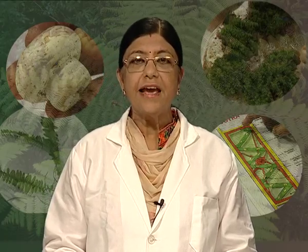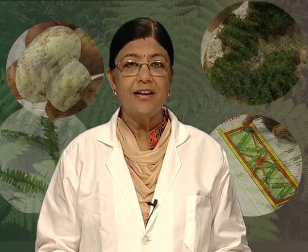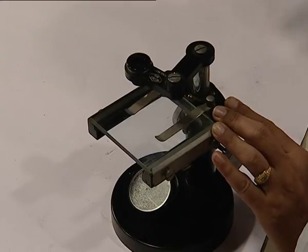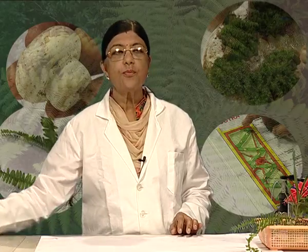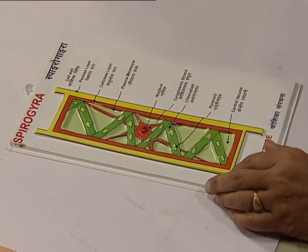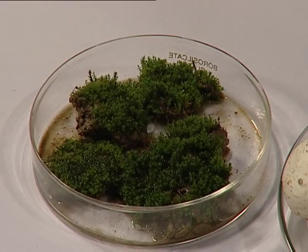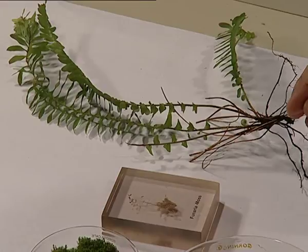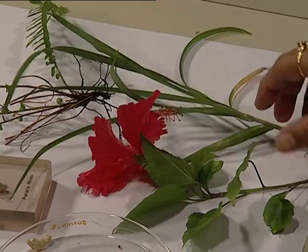Today, we will learn about the characteristics of these organisms one by one. For doing this, we require some substances or materials. These are a dissection microscope or magnifying glass, fresh or preserved specimens of Spirogyra, mushrooms or Agaricus, mosses, some blocks of preserved specimens of mosses, ferns, Pinus needles, cones, as well as some angiospermic plants.